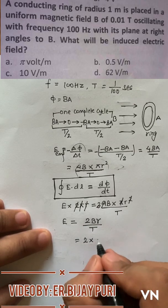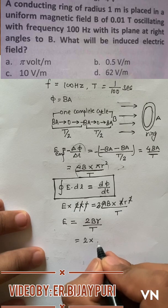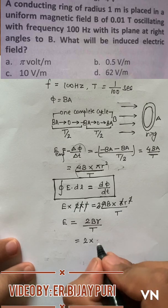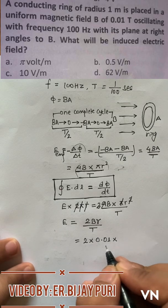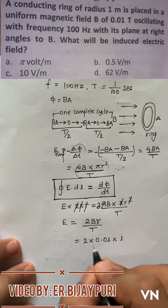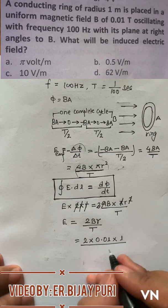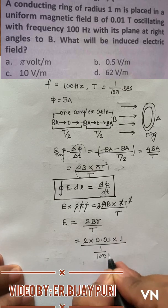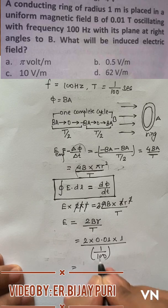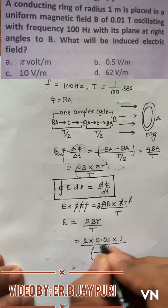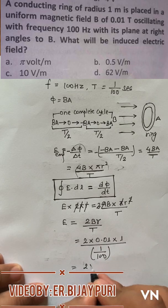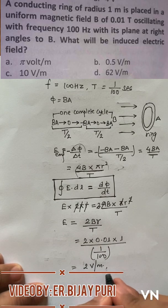So I can directly write electric field equals 2Br by t. That means 2 into the value of B here, which is 0.01 tesla, and the value of radius is 1 meter. The time period is 1 by 100 second. So while solving this, this 100 gets multiplied to 0.01 which ultimately is 1, and 1 into 2 is equal to 2 volts per meter, which is the required answer about this problem.